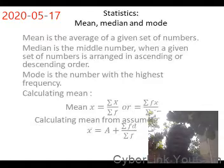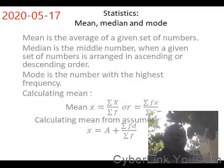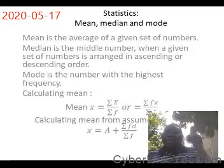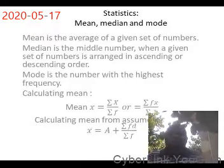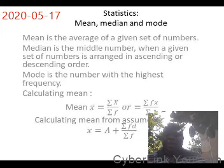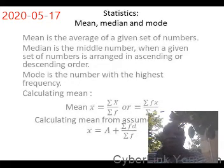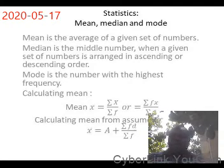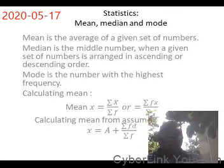Sometimes in calculating mean, we use what is called assumed mean. Assumed mean — from the word assumed — is when we have a set of numbers and we assume a particular number to be the mean; that number we choose is the assumed mean. If you are using assumed mean to find the mean of a given set of numbers, then: mean equals A, where A stands for the assumed mean, plus summation of the frequency times the deviation over summation f.